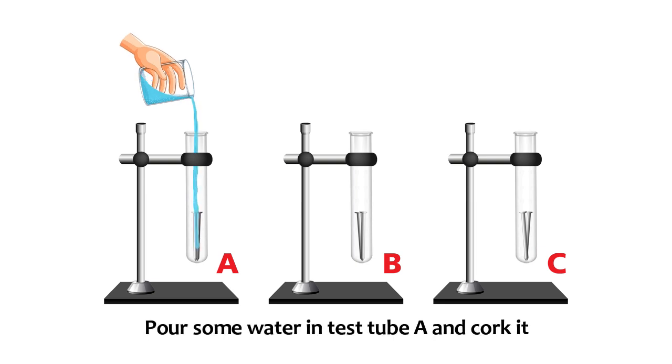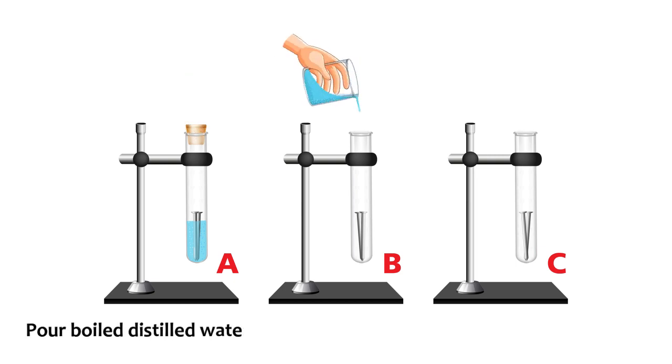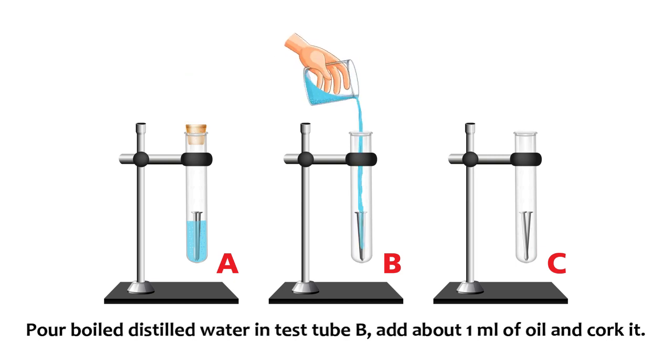Pour some water into test tube A and cork it. Pour boiled distilled water into test tube B. Add about 1 milliliter of oil and cork it.